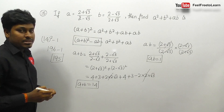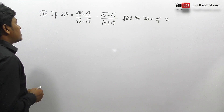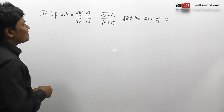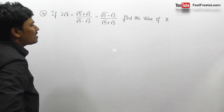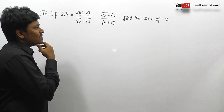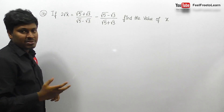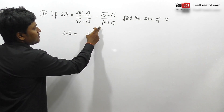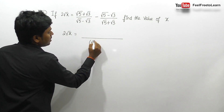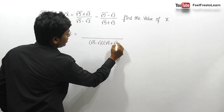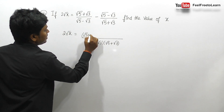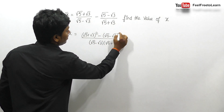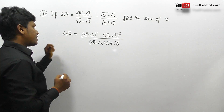Question number 16: if 2√x = (√5+√3)/(√5-√3) - (√5-√3)/(√5+√3), find the value of x. Taking LCM, the numerator becomes (√5+√3)² - (√5-√3)², and the denominator is (√5-√3)(√5+√3).